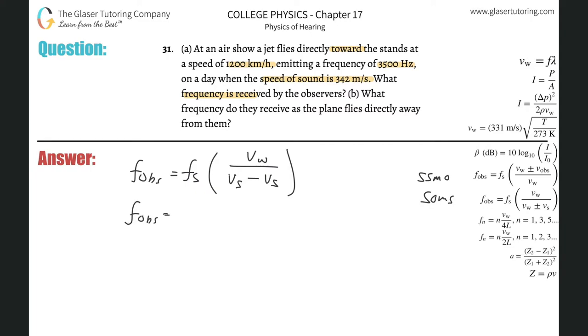Let's plug it all in. Frequency of the observer equals the frequency of the source, 3500 hertz, multiplied by 342 divided by 342 minus the speed of the source. They gave it to us in kilometers per hour, so we need meters per second: 1200 km/hr times 1000 meters per kilometer divided by 3600 seconds per hour equals 333.3 repeating meters per second.